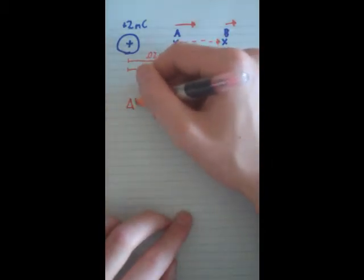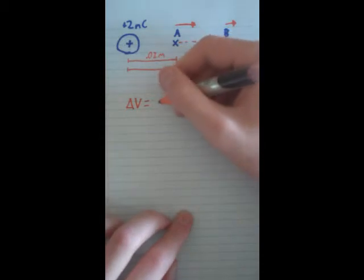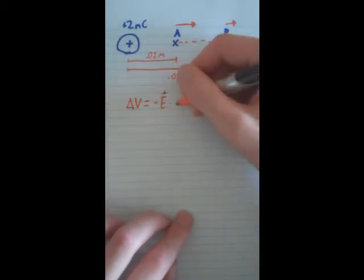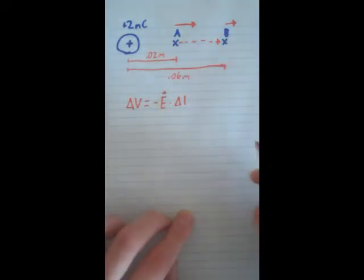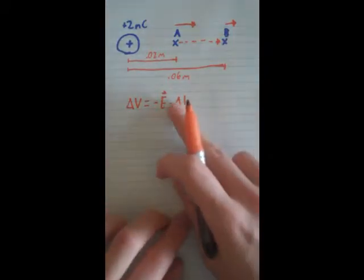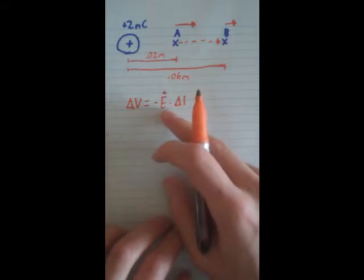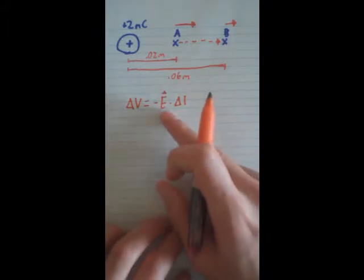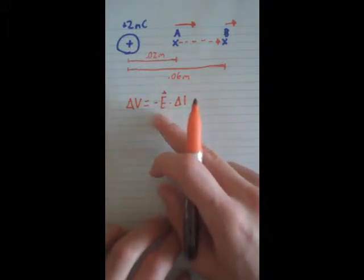Delta V equals negative electric field times delta L. So, if we want to find this, we have to break this down. First of all, our electric field is only due to this thing,